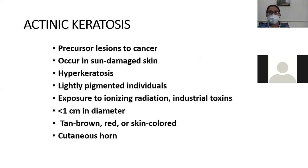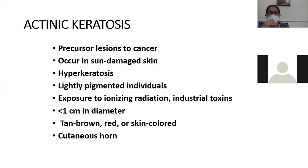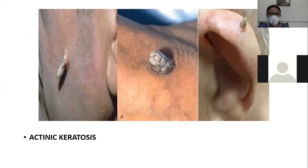Now, actinic keratosis — a benign lesion that is a precursor lesion to cancers. It occurs in sun-damaged, sun-exposed skin. It is associated with hyperkeratosis and involves lightly pigmented individuals. Exposure to ionizing radiation and toxins are risk factors. The lesion is usually less than one centimeter in diameter, tan-brown, red, or skin-colored. It may present as a cutaneous horn.